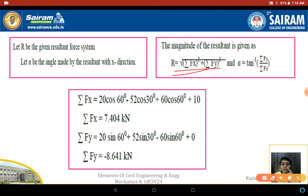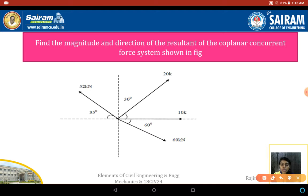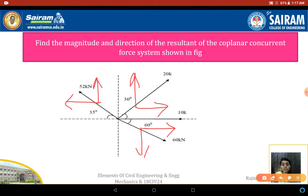Before solving for the resultant force, we need to find the summation of all horizontal forces and all vertical forces. As stated, all forces are inclined except the 10 kN force. So the 20 kN, 52 kN, and 60 kN forces each need to be resolved once for the x-axis and once for the y-axis, without changing their directions.